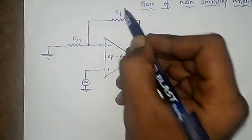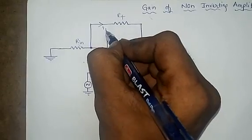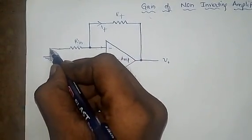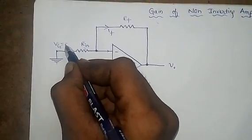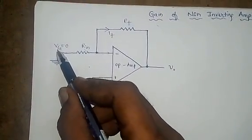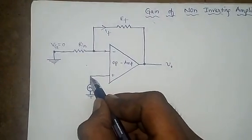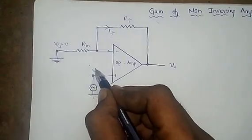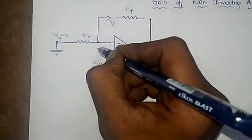This is the feedback resistor. The current flowing through the feedback resistor is IF. Let this point ground VG be equal to 0 — because this is ground, ground is 0. Let this point be VIN, and let this point be VA.